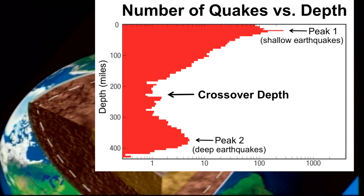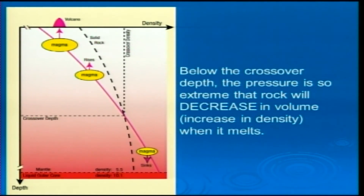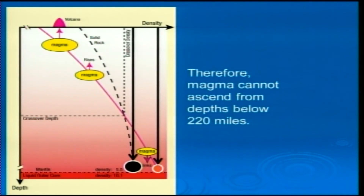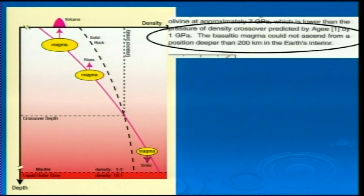As you go down past 220 miles, there are more earthquakes until another peak around 400 miles deep. Then they go away because at 400 miles the pressure is so extreme that things move like putty instead of fracturing along fault lines. Below the crossover depth, pressure is so extreme that rock will decrease in volume and increase in density when it melts — so magma cannot ascend from depths below 220 miles. The Japanese paper concludes: 'The basaltic magma could not ascend from a position deeper than 200 kilometers,' which is even less than 200 miles. This is all explained in greater detail in Dr. Brown's book.